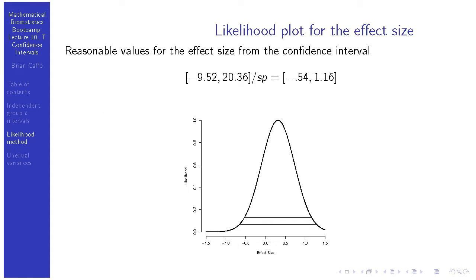On the next slide I have a likelihood plot for the effect size using the non-central t distribution. I got a rough range of values to plot by taking my confidence interval, negative 9.52 to 20.36, and dividing by the pooled standard deviation, giving about negative 0.54 to 1.16. Note that negative 0.54 to 1.16 is not a valid interval for the effect size, because we haven't accounted for uncertainty in estimating s_p in the denominator. Later we'll talk about using bootstrapping to generate confidence intervals for nearly any statistic.